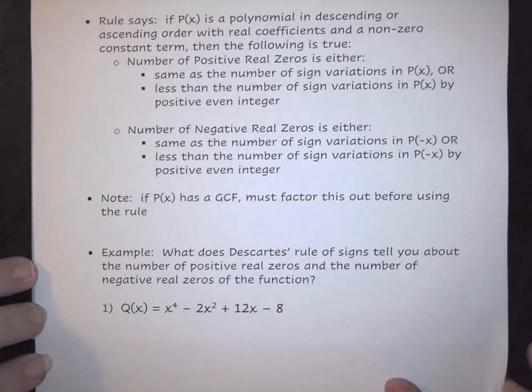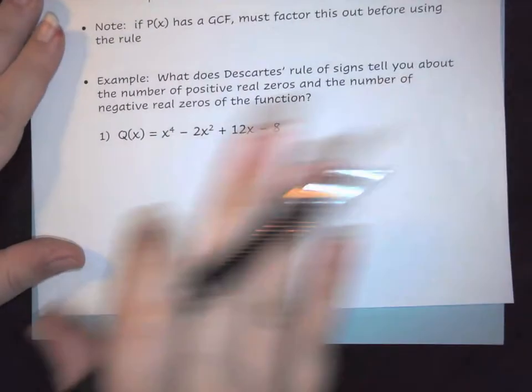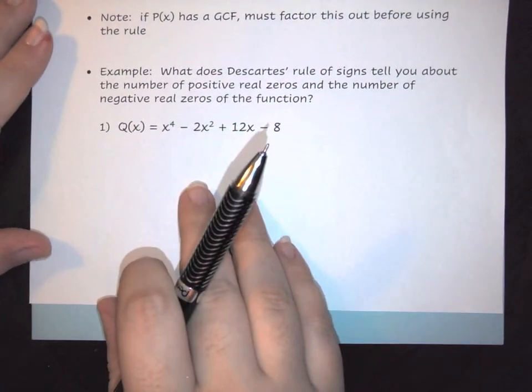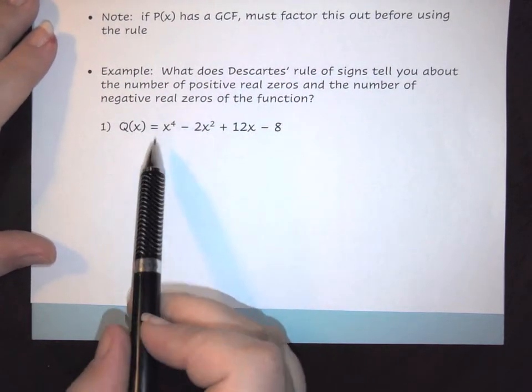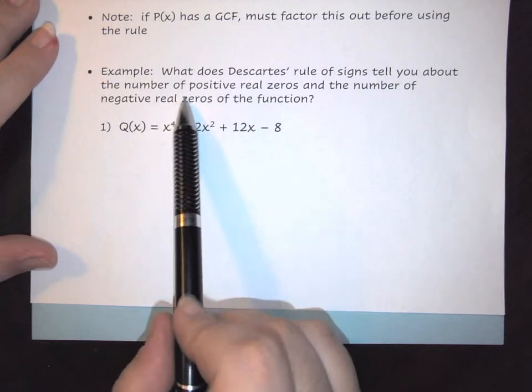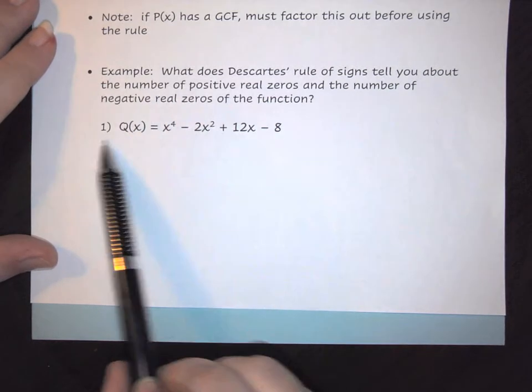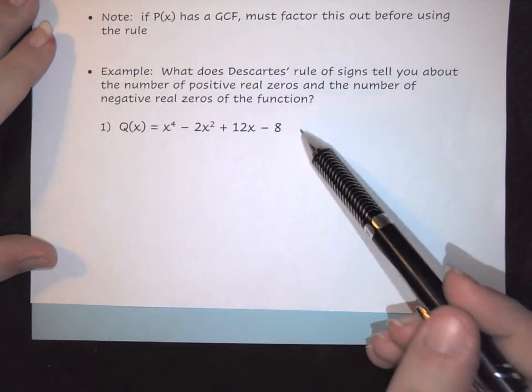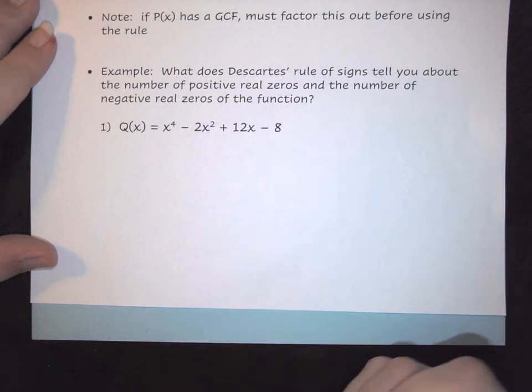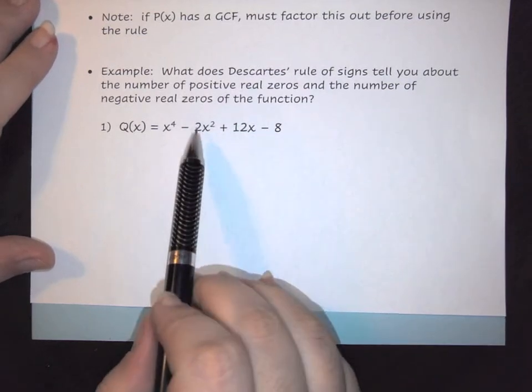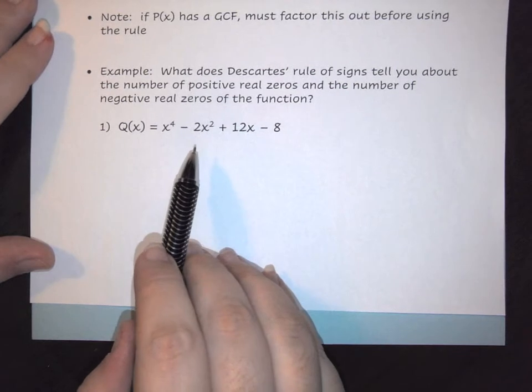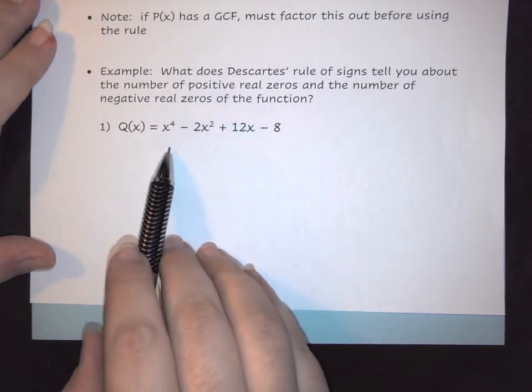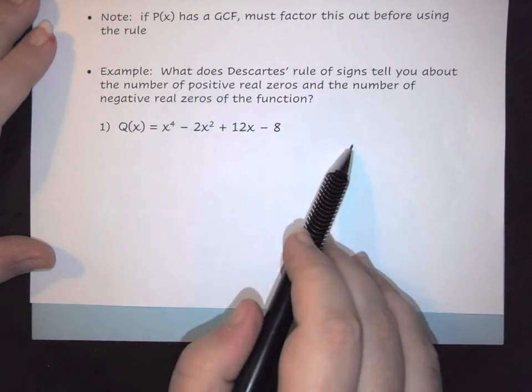That can be a little confusing until you actually see it, so let's take a look at an example. Here we want to find out what Descartes' rule tells us for positive and negative zeros. We have our equation here.